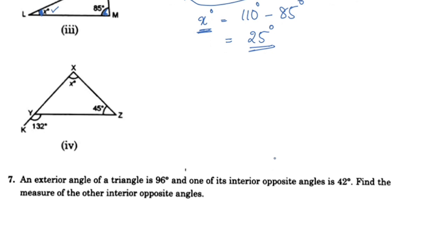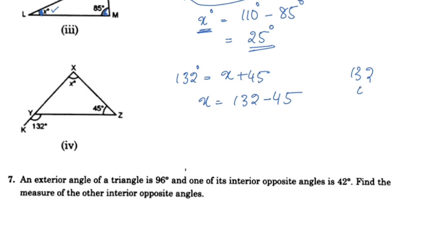Next question: X is an interior angle. The exterior angle is 132 degrees. So 132 is equal to X plus 45. Therefore X equals 132 minus 45, which is 87 degrees.